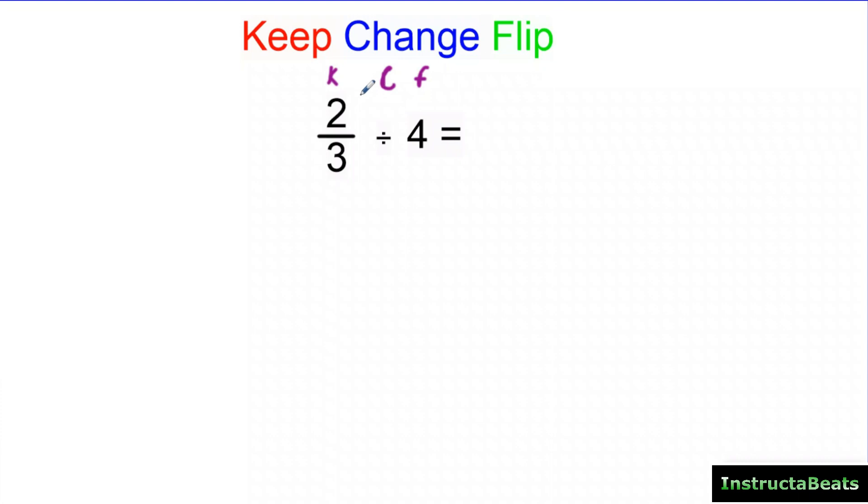And some of you might be like, hold on, Mr. InstructaBeats, that's not a fraction. It's a whole number. Well, really, we know fractions are division equations. So we can just turn this into four divided by one, right? Or four over one. And now it's a fraction. So really, the first thing you do is make sure everything is a fraction, whether it's a proper fraction or improper fraction. You're going to want to turn mixed numbers into improper fractions. Just get everything as a fraction.